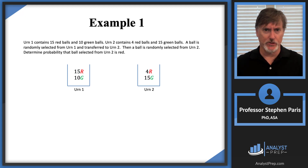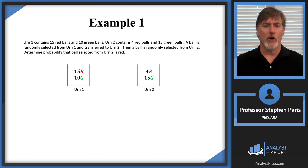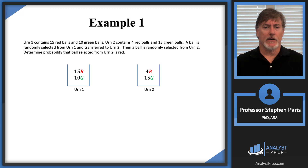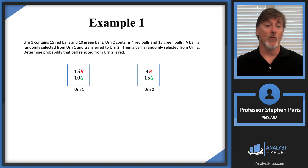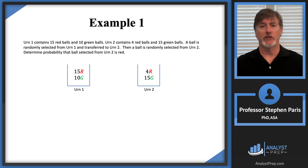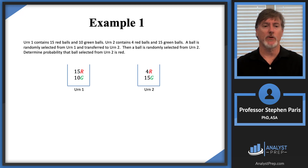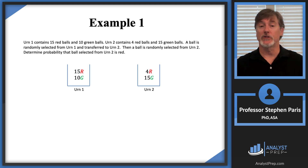Both examples use the same format, where we have two urns. Urn 1 contains 15 red balls and 10 green balls, and urn 2 contains 4 red balls and 15 green balls. A ball is going to be randomly selected from urn 1 and transferred to urn 2, and then a ball is going to be selected from urn 2. We want to know what the probability is that the ball selected from urn 2 is red.